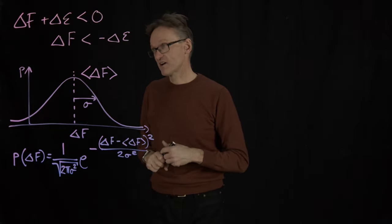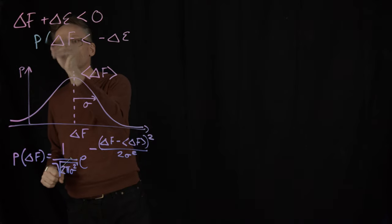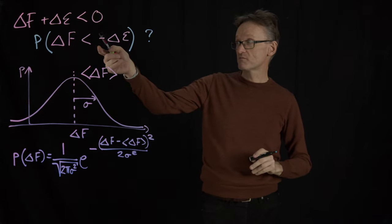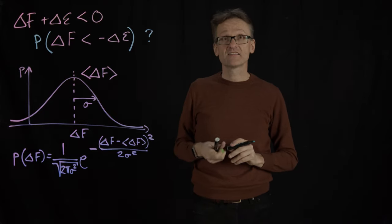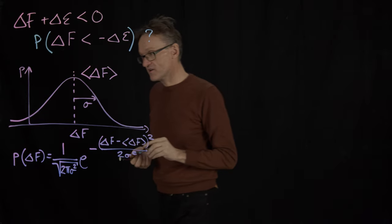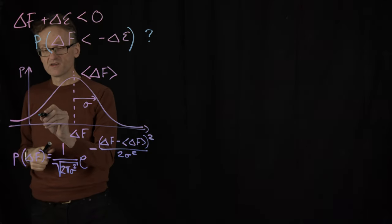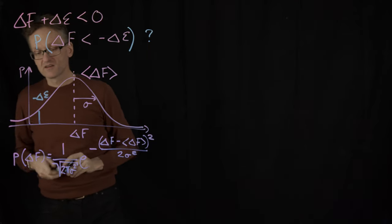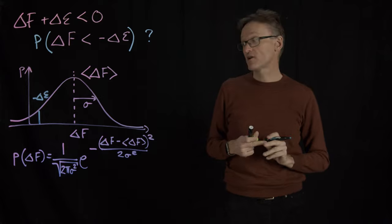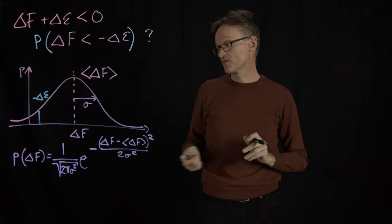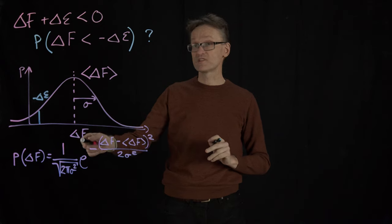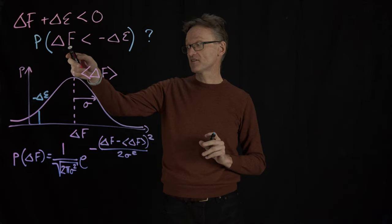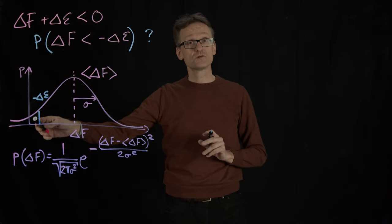What I really wanted to ask myself is what was the probability of this happening, meaning that delta f falls below minus delta epsilon. Somewhere here I'm going to have a value minus delta epsilon. I don't know if it's positive or negative right now, but in general it's going to be much smaller than large delta f, because this is just one residue while that is the rest of the chain. The probability of this happening is just the integral from minus infinity up to that value.